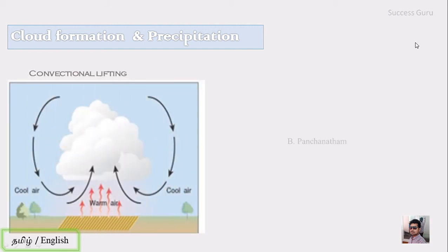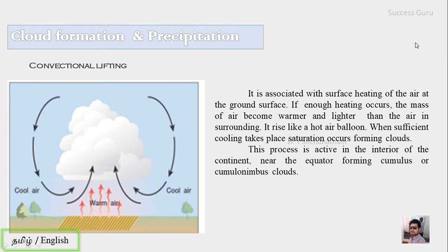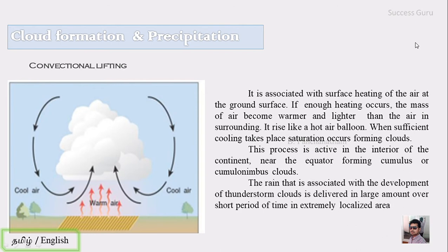The next one is convectional lifting. It is associated with surface heating of air at the ground surface. If enough heating occurs, the mass of air becomes warmer and lighter than the surrounding air and rises like a hot air balloon. When sufficient cooling takes place, saturation occurs, forming clouds. When the surface is heated, the air mass near the surface warms, and this warmer air moves upward. Such moving air mass expands and forms clouds. This process is called convectional lifting and is active in the interior of continents near the equator, forming cumulus and cumulonimbus clouds.